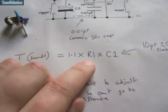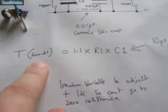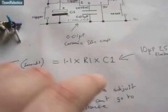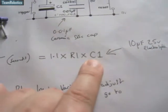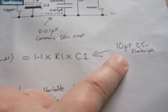C1 times R1 times 1.1 equals the time in seconds that the timer will trigger for. I'm guessing the C1 would be in microfarads. In this case I've used a 10μF.